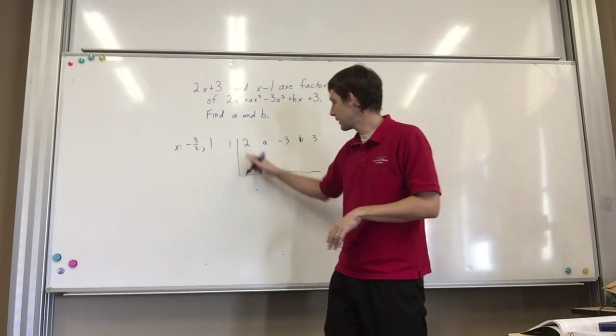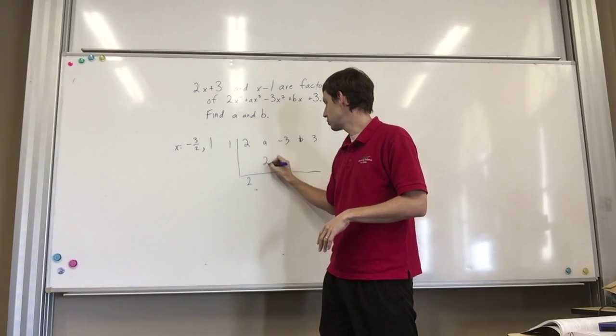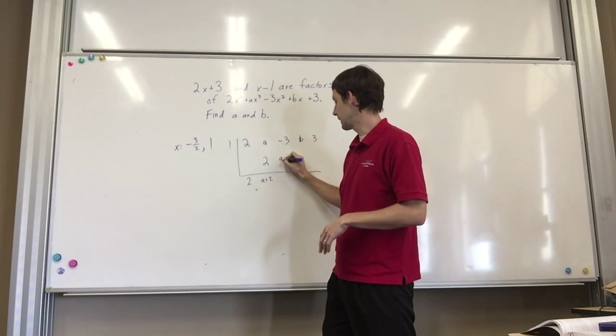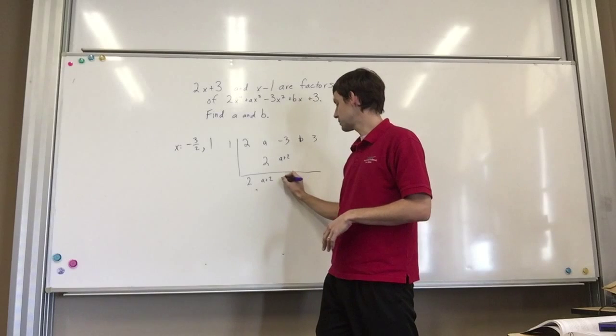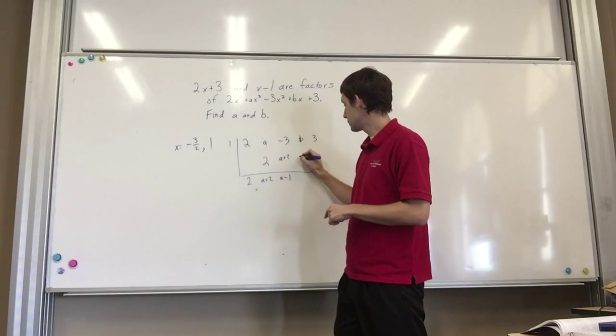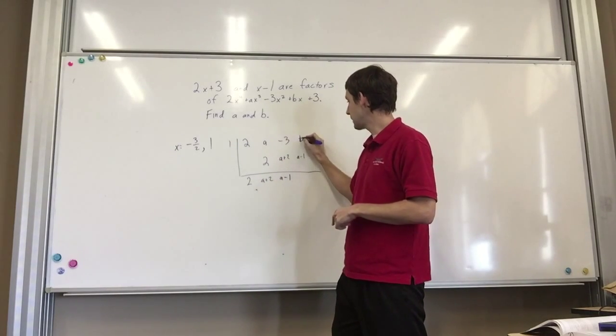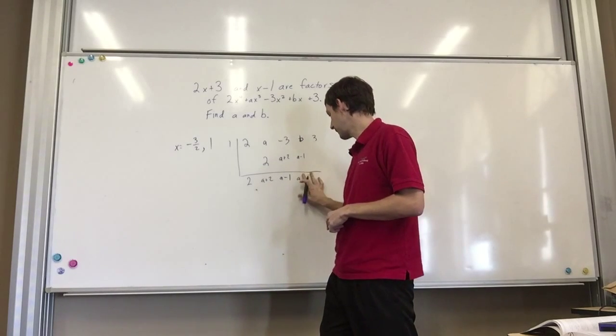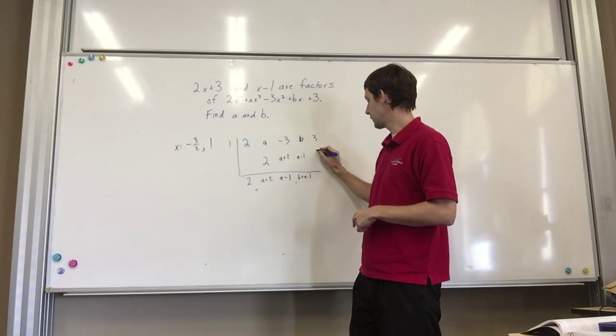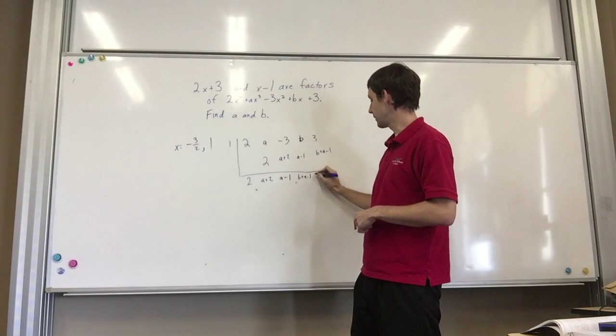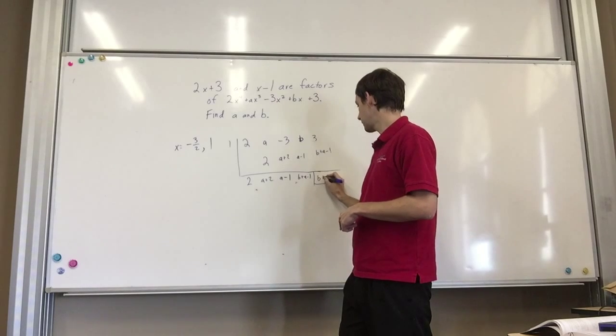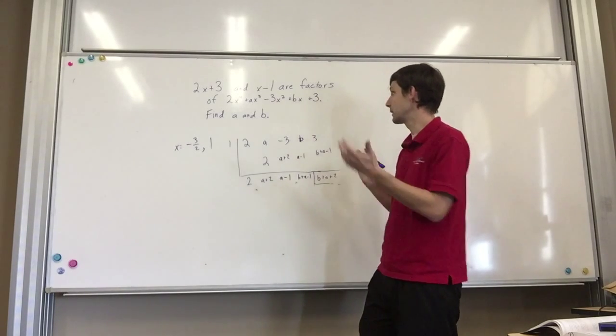So I'm going to put the 1 in. So the way that we do this is we bring down the 2. 1 times 2 is 2. So a plus 2 would simply be a plus 2. 1 times a plus 2 would, again, be a plus 2. Negative 3 plus a plus 2 would be a minus 1. Negative 3 plus 2 is negative 1. a minus 1 times 1 would be a minus 1. b plus a minus 1. So I would have, sorry, I would have b plus a minus 1. And then 1 times that, again, will give me b plus a minus 1. Add those together. And I would get my final result of b plus a plus 2. 3 plus 1 is 2.